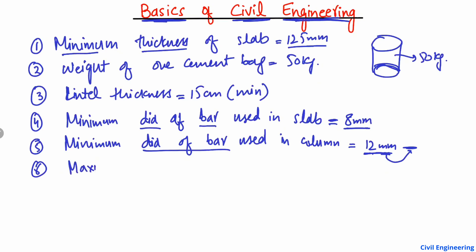The sixth important point is the maximum chair spacing. Chair spacing is provided mostly for handling the bars. The maximum chair spacing allowed is 1 meter.